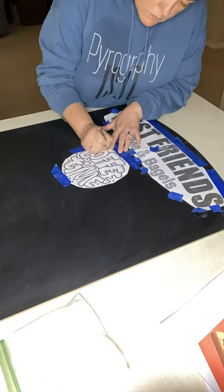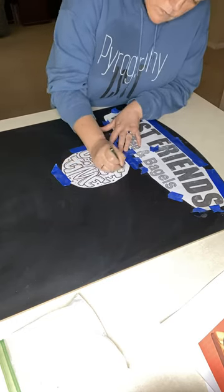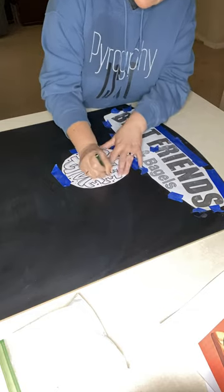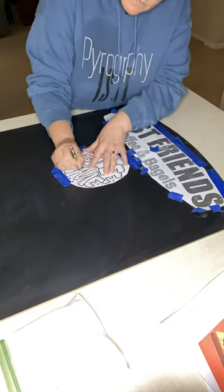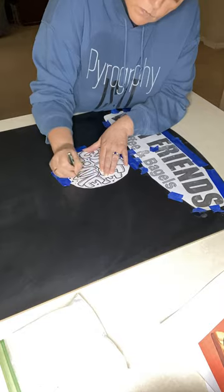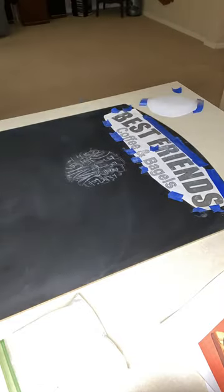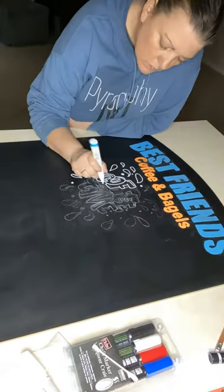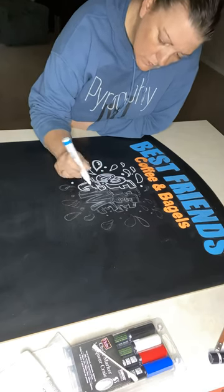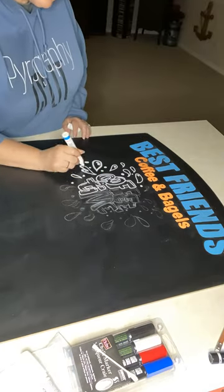You just go over every single little spot that you want to transfer over, and this makes it really nice and clean. Once you take it off, then you add your chalkboard markers—I use water-based chalkboard markers.